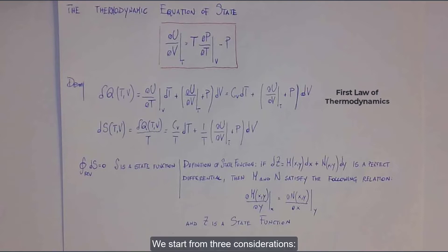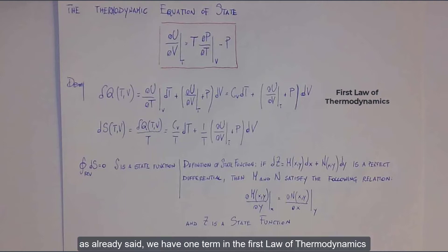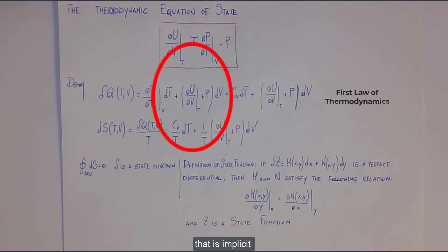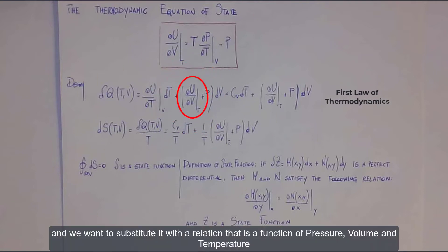We start from three considerations. First consideration: as already said, we have one term in the first law of thermodynamics that is implicit, and we want to substitute it with a relation that is a function of pressure, volume, and temperature.